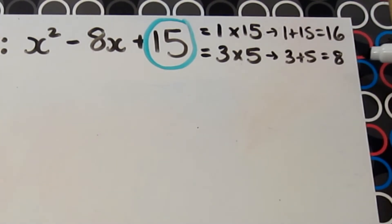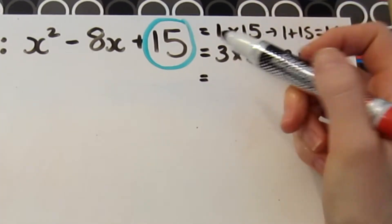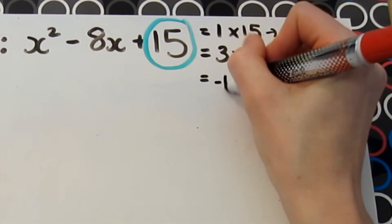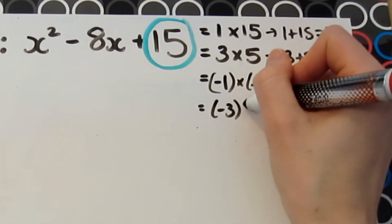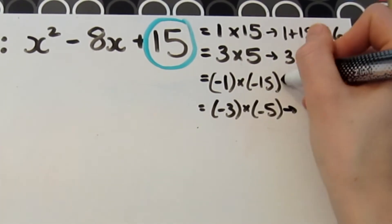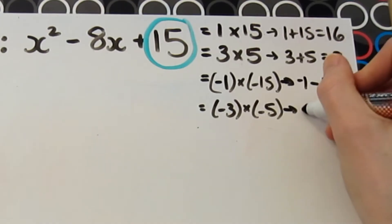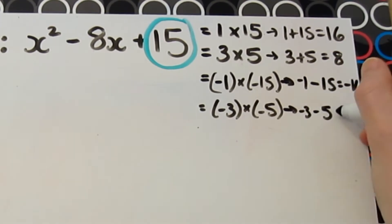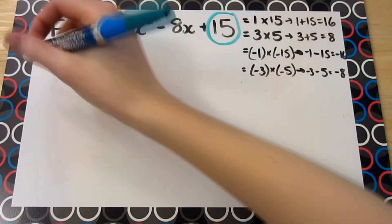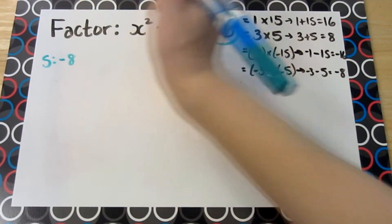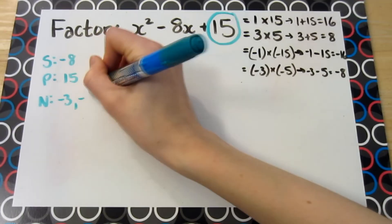The problem is that both of these sums are positive, and we're looking for a negative sum. One thing you can't forget to include are the negative factors. To get a product of positive 15, we could also multiply negative 1 times negative 15, as well as negative 3 times negative 5. When you add these: negative 1 plus negative 15 gives negative 16, and negative 3 plus negative 5 gives negative 8. That means negative 3 and negative 5 satisfy the equation. The sum is negative 8, the product is positive 15, and the numbers are negative 3 and negative 5.